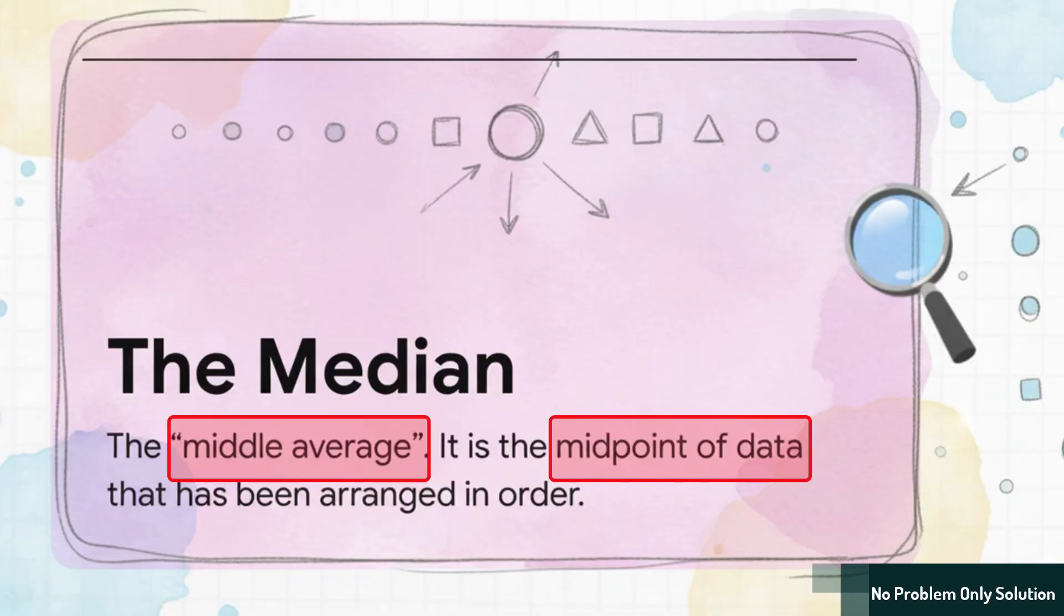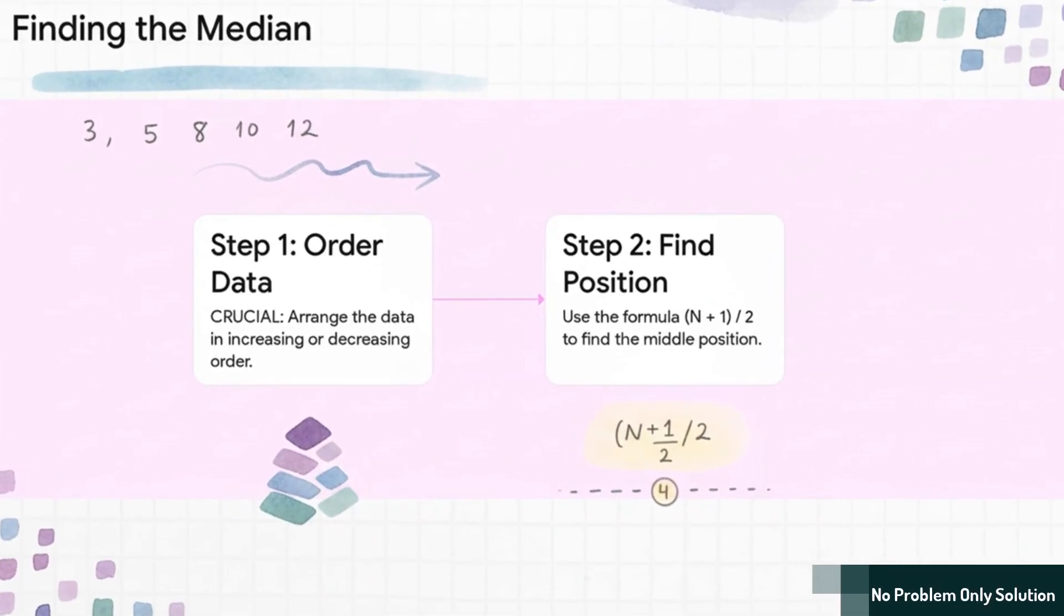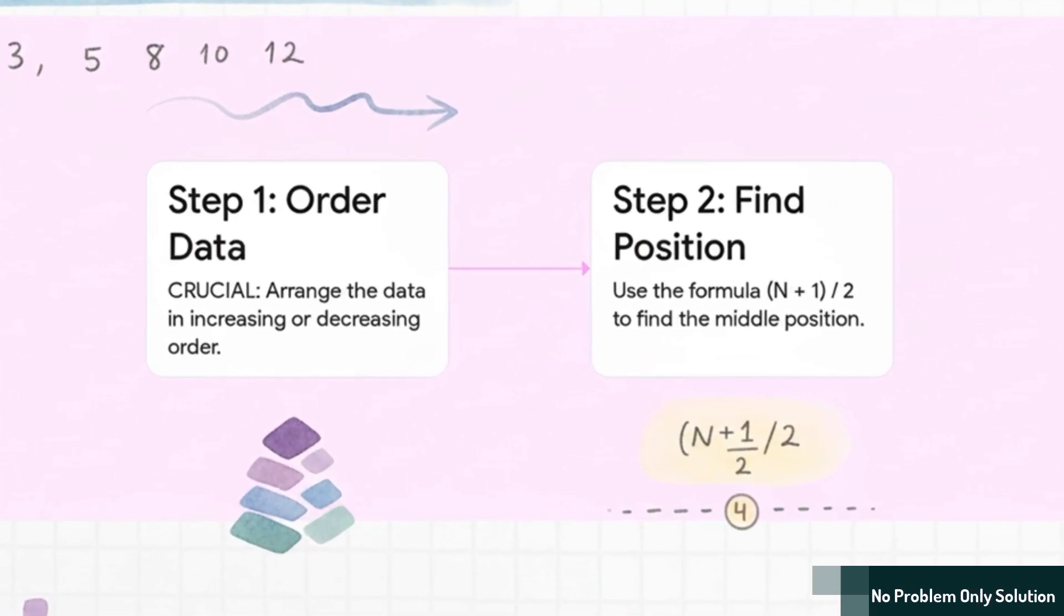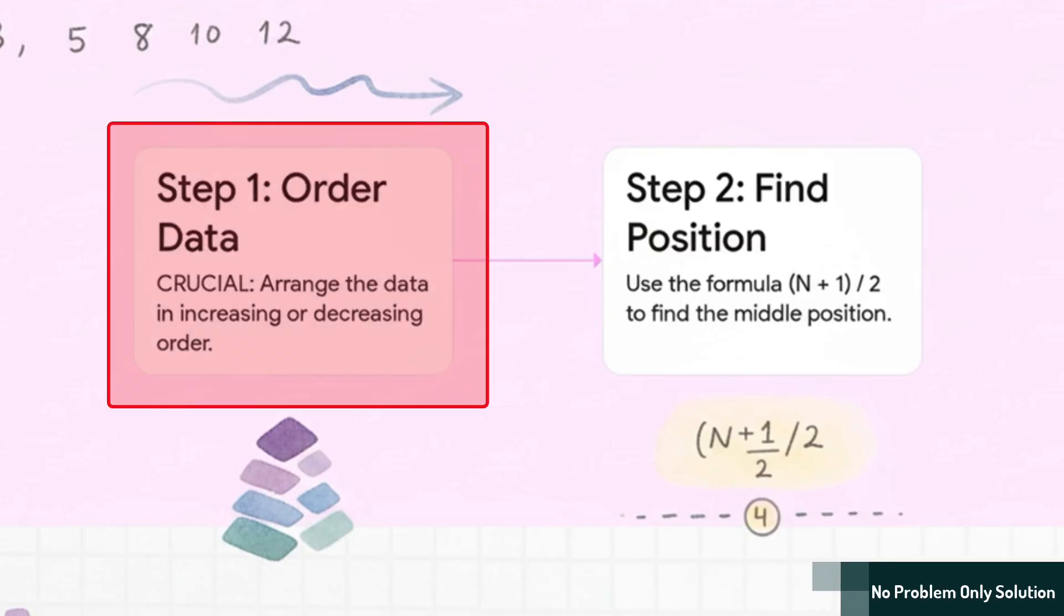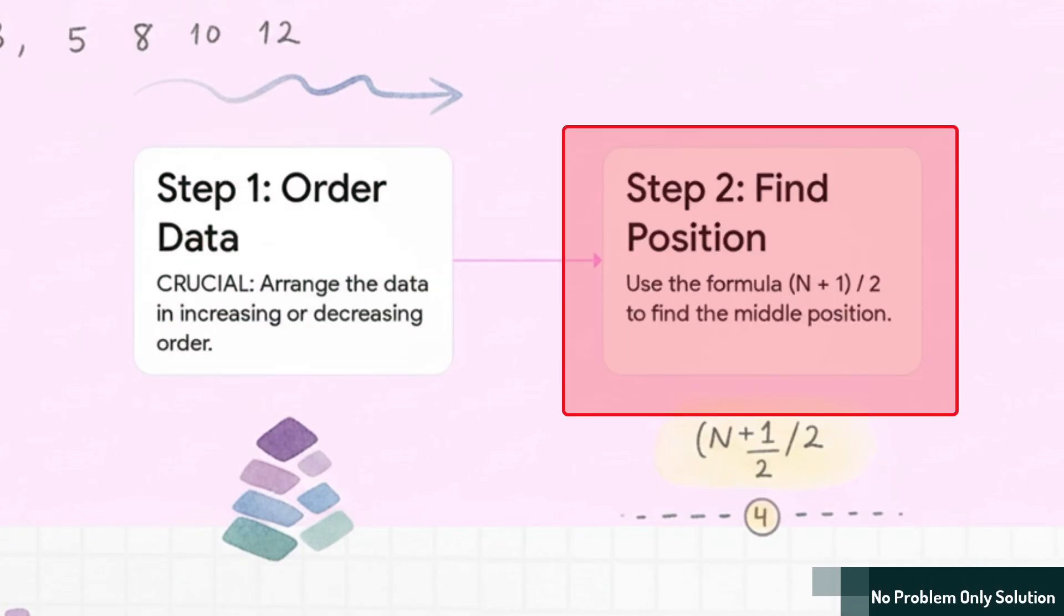So, you have exactly half the scores above it, and half the scores below it. Now, to find the median, there's a first step that is absolutely critical. You can't skip this. Ever. You have to arrange the scores in order first, from lowest to highest. Only after you've done that, can you use this simple little formula here. N plus 1 divided by 2. And this formula tells us the position of the middle value.